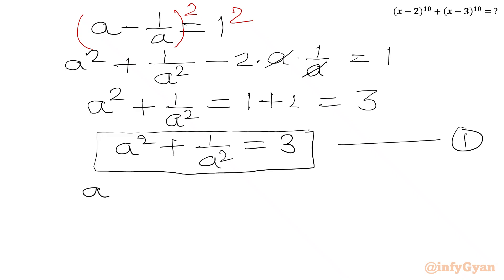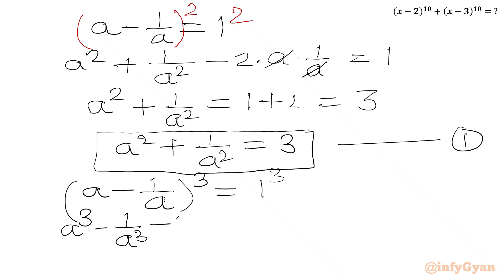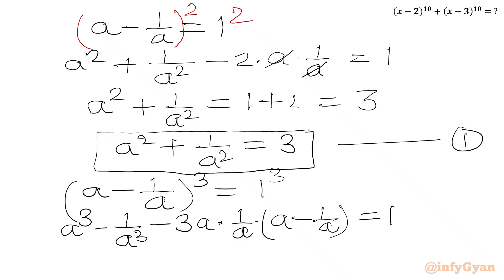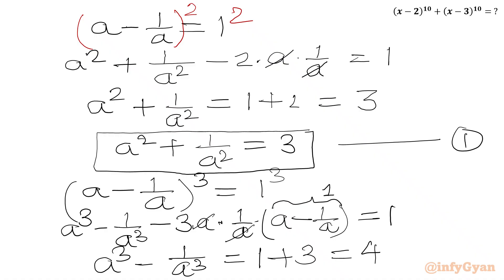Now cubing both sides of A - 1/A = 1 using the (A - B)³ formula: A³ - 1/A³ - 3·A·(1/A)·(A - 1/A) = 1. The A terms cancel and we substitute A - 1/A = 1, giving A³ - 1/A³ = 1 + 3 = 4. We will call this equation number 2.